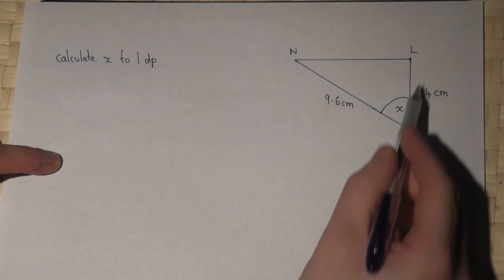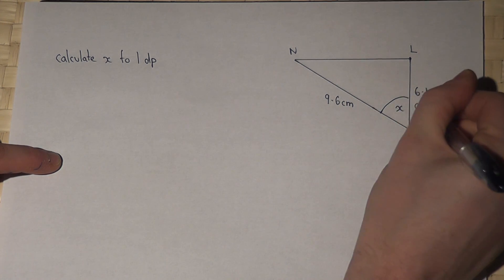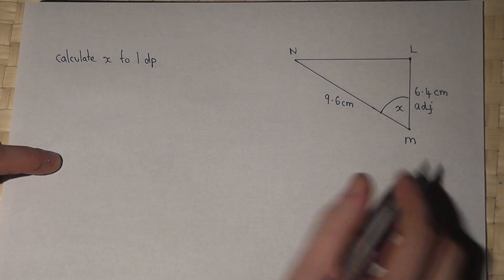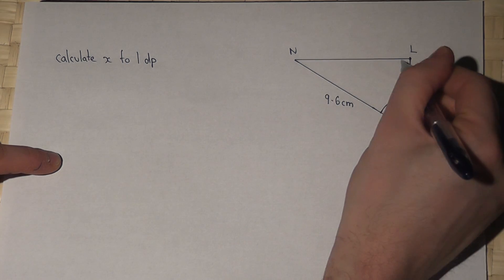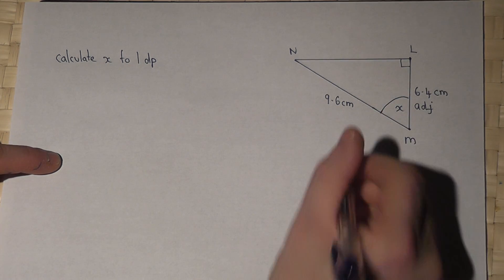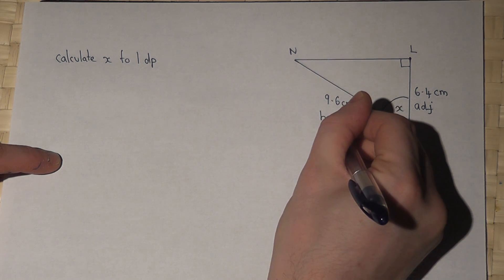Now this side here is next to, so is adjacent to the angle. This side here is opposite this given right angle, so that one is the hypotenuse.